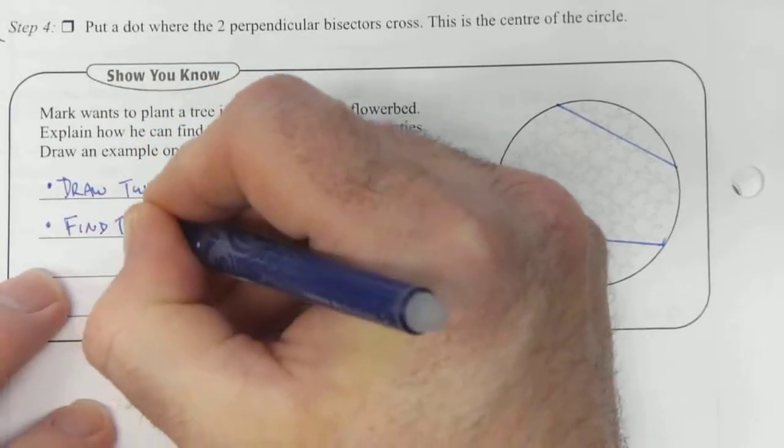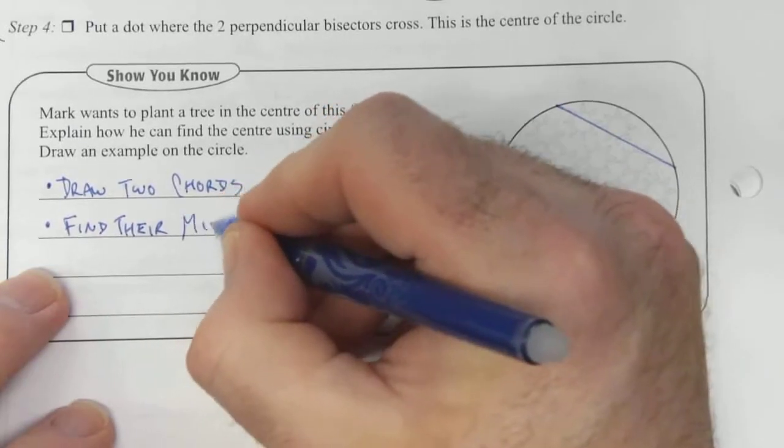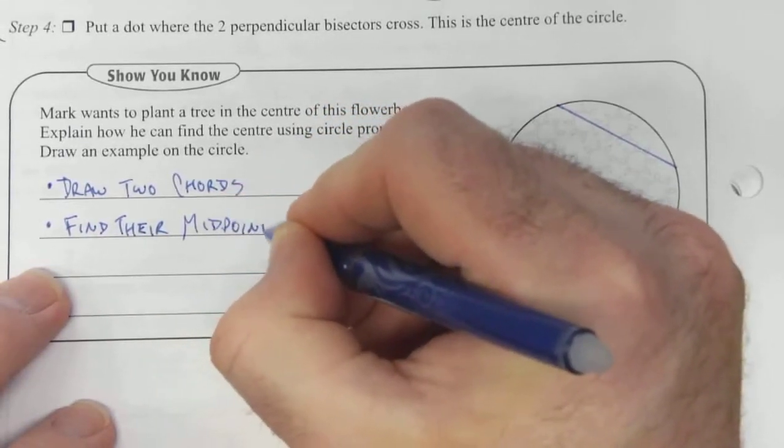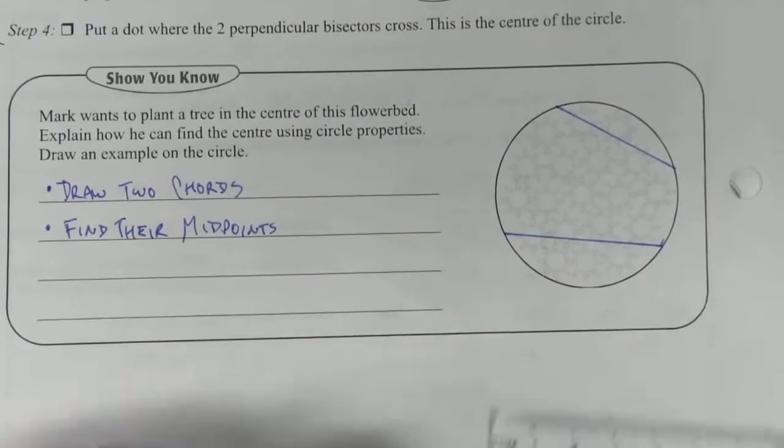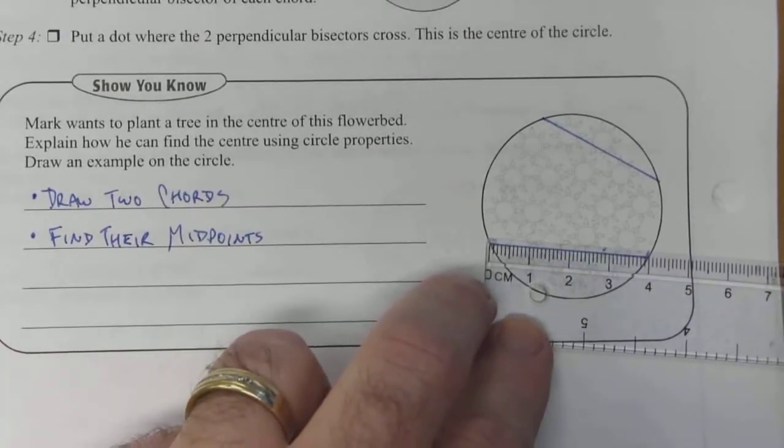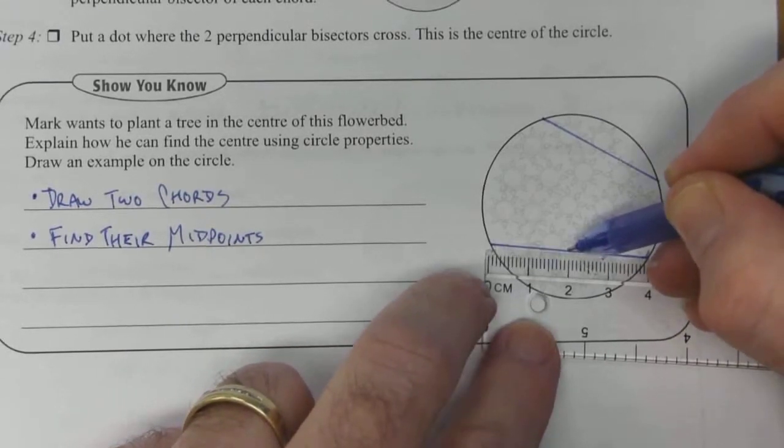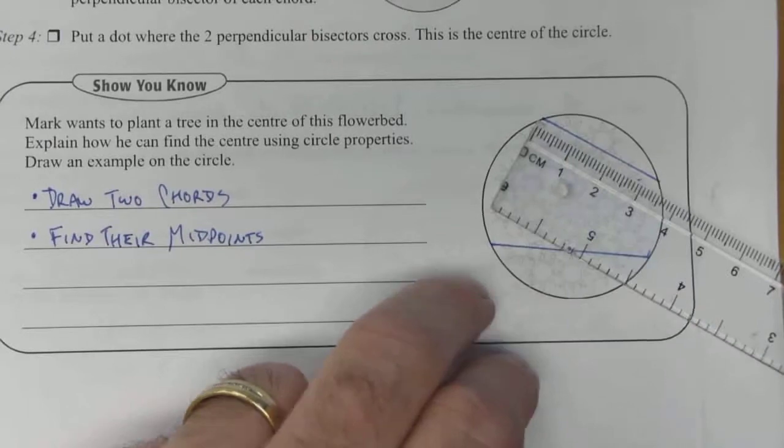Find their midpoints. So, measure it out. That one is four centimeters, so the midpoint is two. Approximately right there.